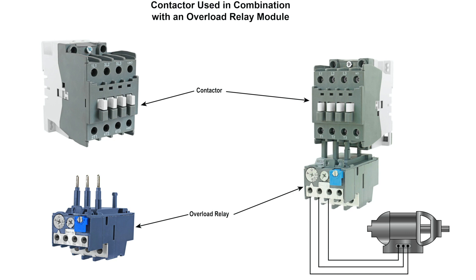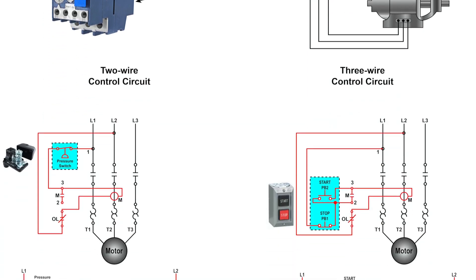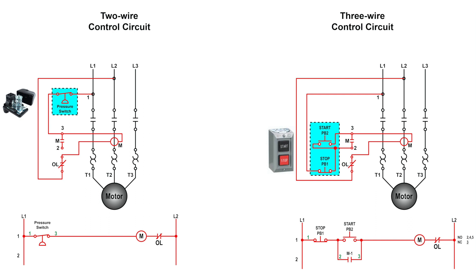Two-wire control circuit is commonly used in applications where the operation is automatic, and the pilot device starts the motor automatically as needed. A three-wire control circuit is similar, except it has an extra set of contacts used to seal in the circuit. Generally, these types of circuits are controlled with a start/stop push button.